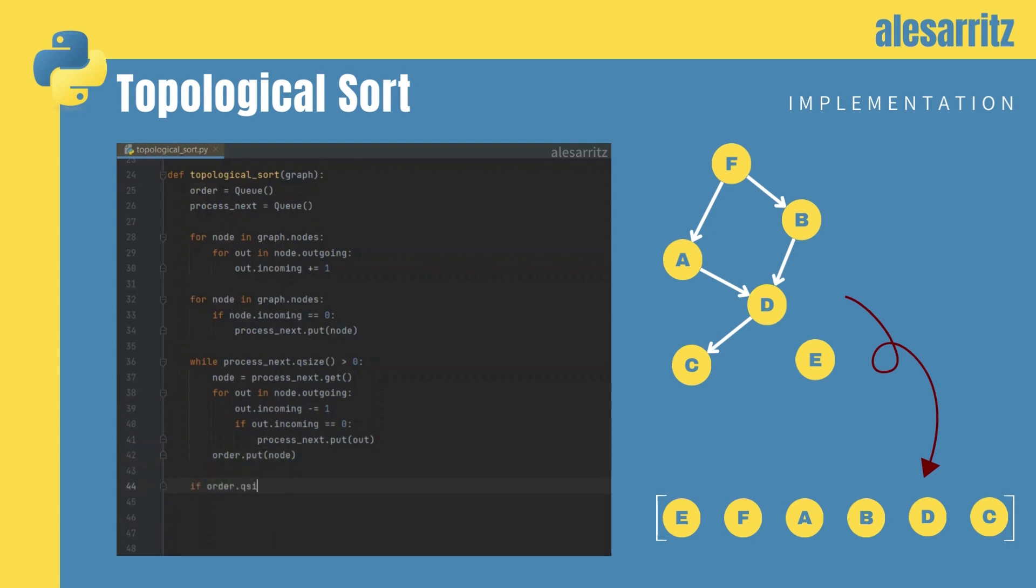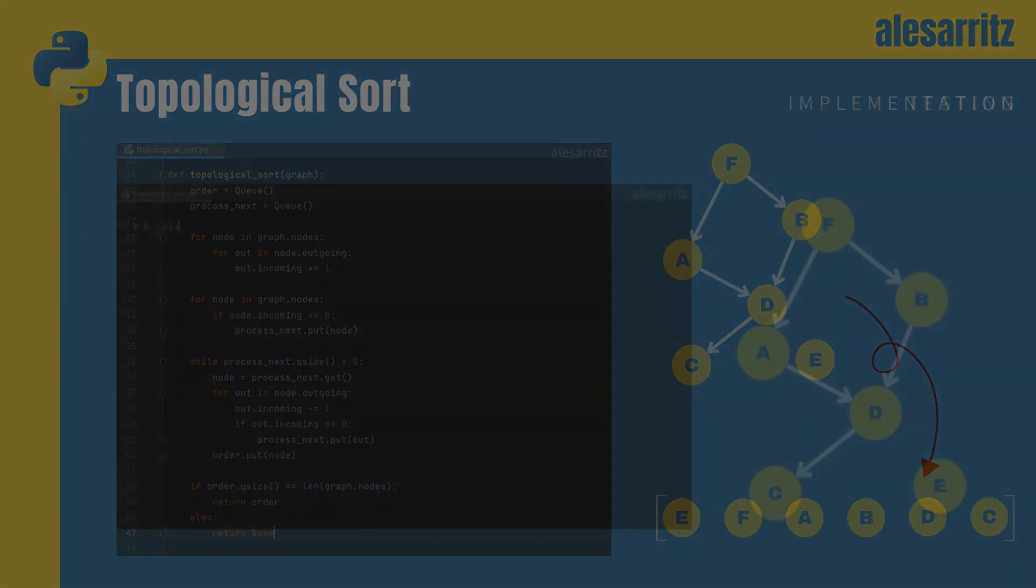When all the nodes have been added to the topological sort, we check if Order contains all Graph's nodes. If it does, we return Order. If it doesn't, we return None.